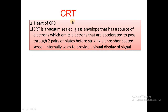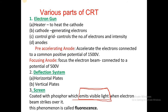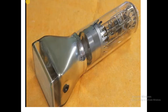What is CRT? CRT is very important in the CRO — it is the heart of the CRO. CRT is a vacuum sealed glass envelope. It has a source of electrons which emits electrons that are accelerated to pass through two pairs of plates before striking a phosphor-coated screen internally, so as to provide a visual display of the signal.